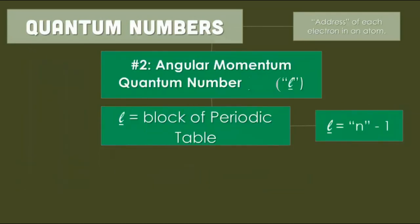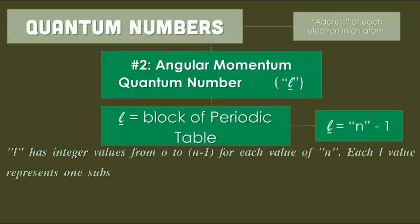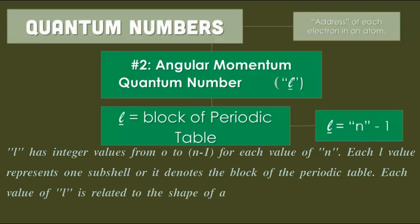Now second quantum number, that is angular momentum quantum number, and it is denoted by l. It tells about the block of periodic table. L has integer values 0 to n minus 1. For each value of n, each l value represents one subshell or it denotes the block of the periodic table.